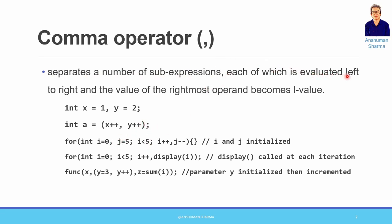Each sub-expression is evaluated left to right, and the value of the rightmost operand becomes the result. So something like x++ comma y++ will evaluate both, and the result of the rightmost will be provided as the final value. Here we have used comma after one — multiple initialization and definitions of x and y — then a is assigned the result of x++ comma y++.